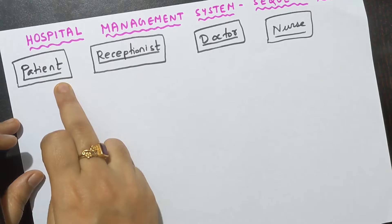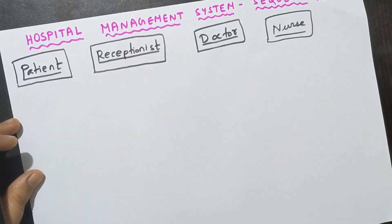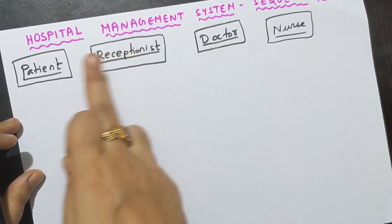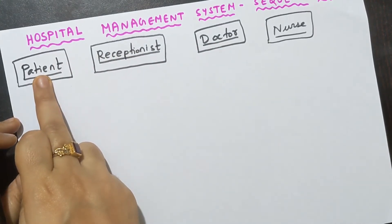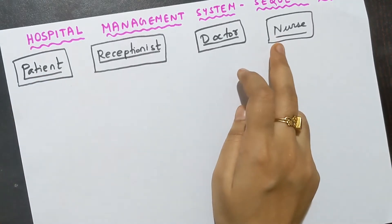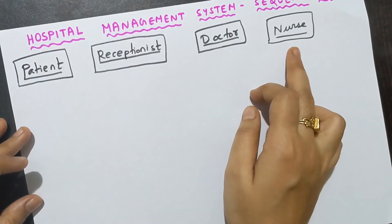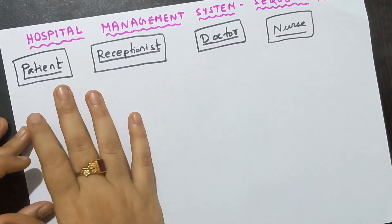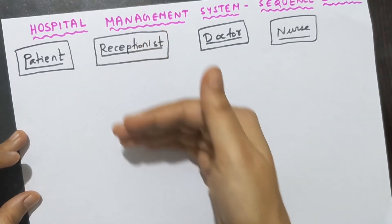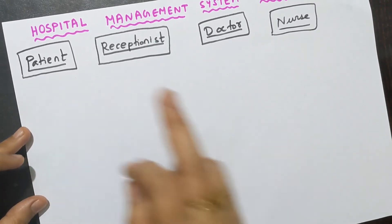The order is: first, the patient will take the appointment from the receptionist. Next, the receptionist will ask the doctor whether he is available on that day at that time. Then the doctor will say whether he or she is available. Only then can the receptionist confirm to the patient that the appointment has been confirmed. This flow is very, very important.